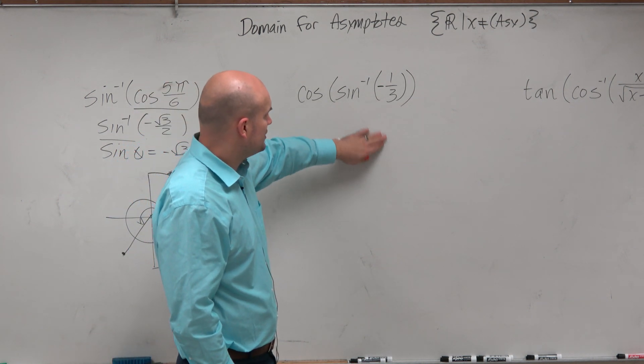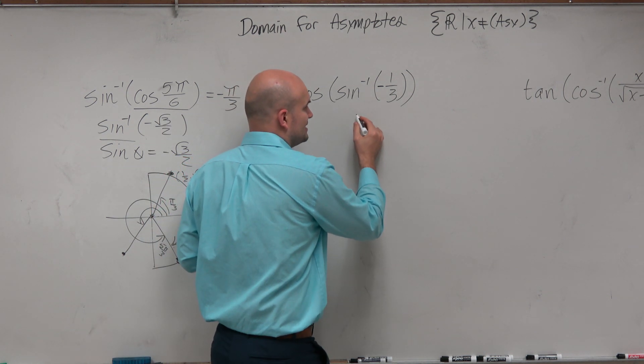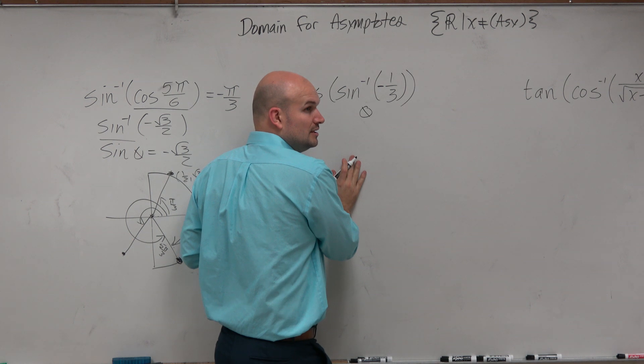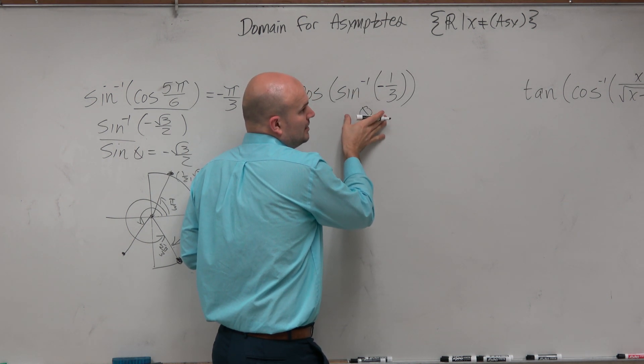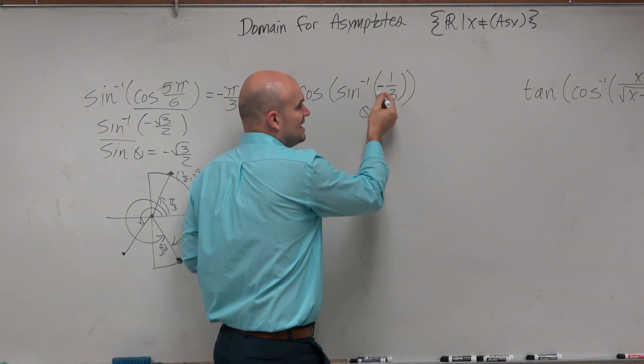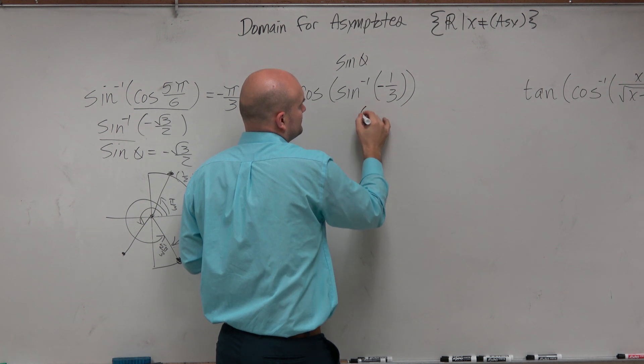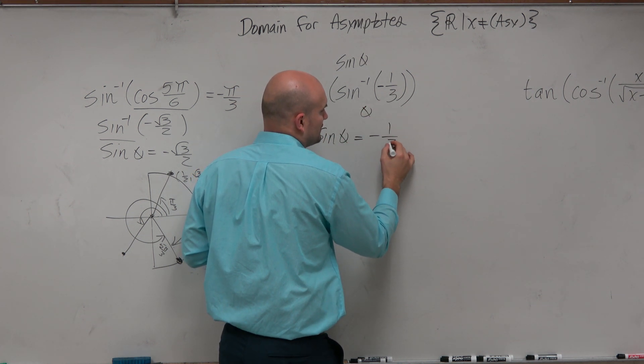So if we want to evaluate the cosine of this, remember, just like we do over here, if we're going to evaluate this on its whole, we'd be looking for the angle. But this is not a value over the unit circle. Think about it this way: this is saying the sine of some angle is equal to negative 1 over 3.